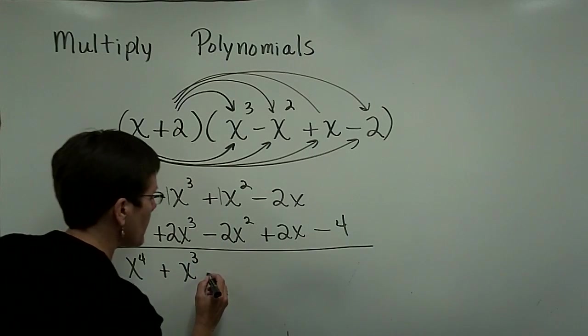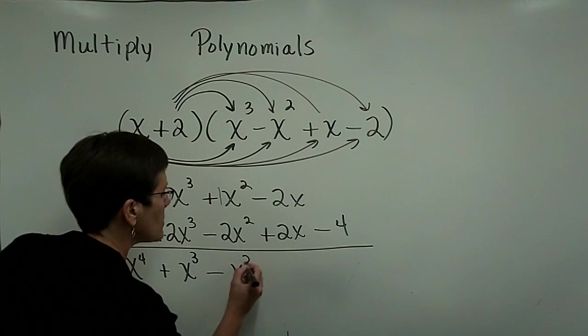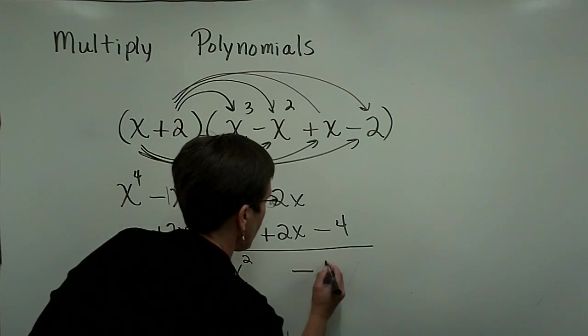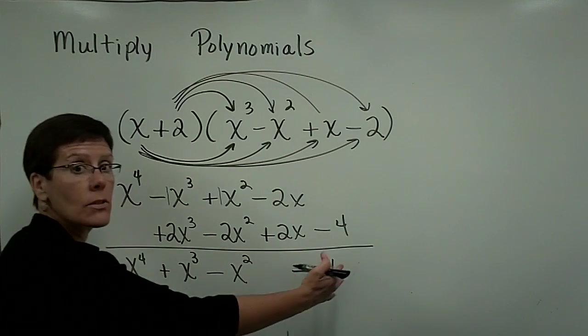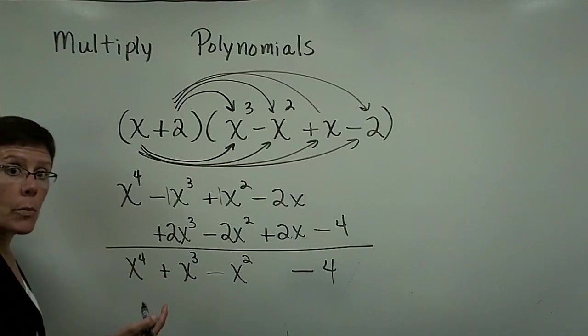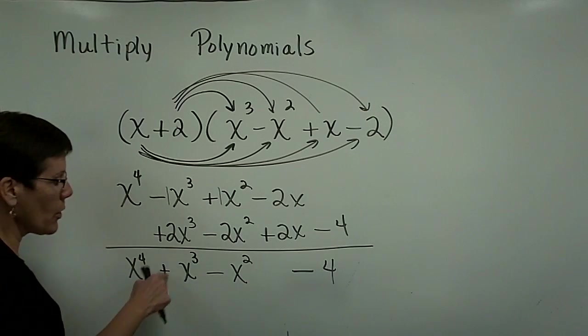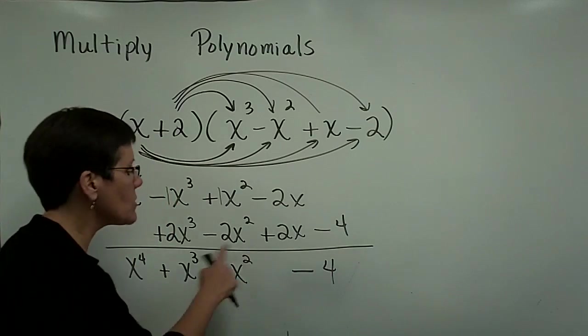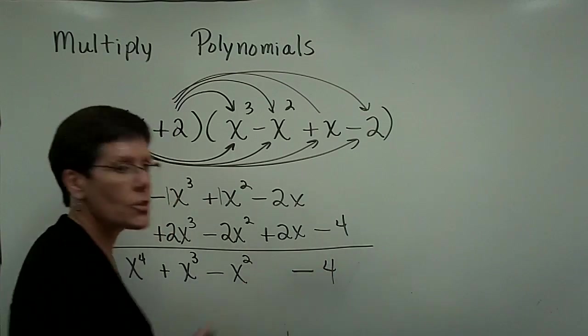1 and a negative 2 is a negative 1x squared. Those add to be 0, and I bring down my minus 4. Here's my answer. The degree of this polynomial is 4. The degree of this term is 4, of this term is 3, of this term is 2, and of that term is 0.